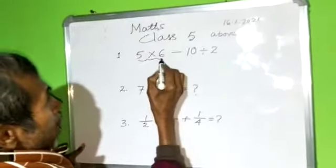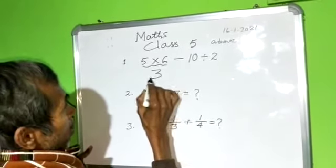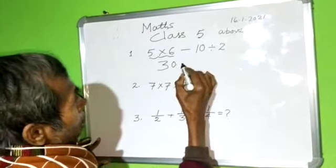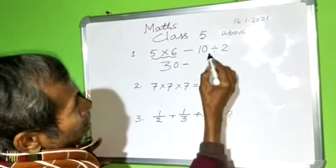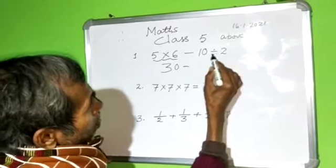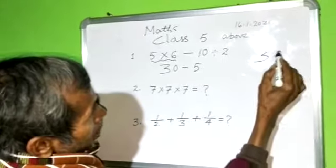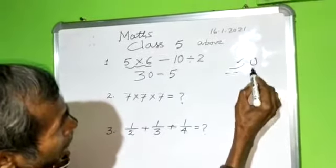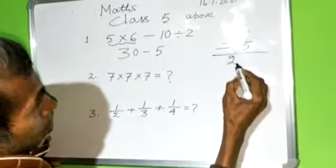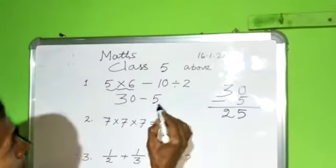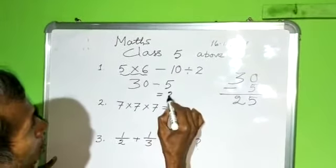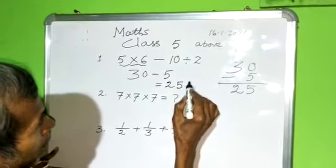This part: 30 minus 10 by 2, that's 5. 30 minus 5 equal to 25. This is the answer.